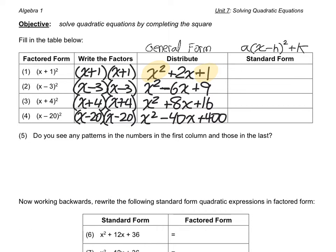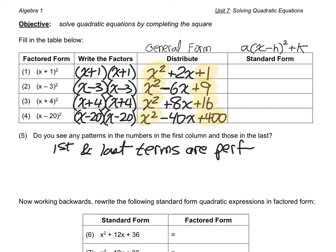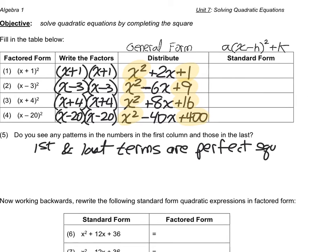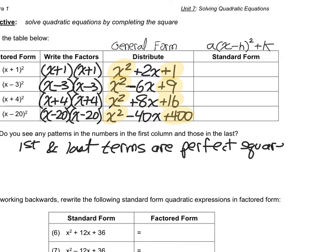In each case, my last term is a perfect square. And as it turns out, so is the first term. First and last terms are perfect squares. That's great because that's a predictable pattern.